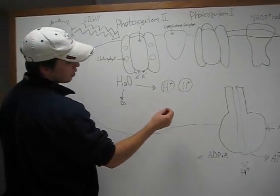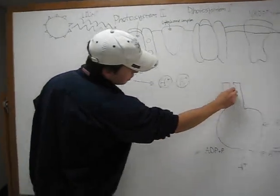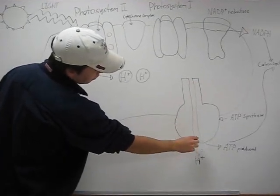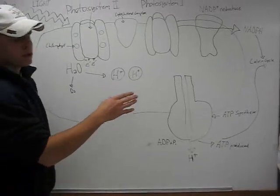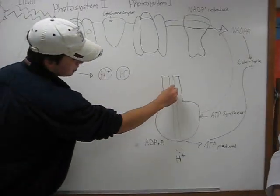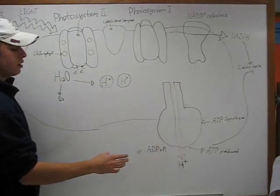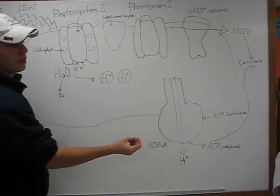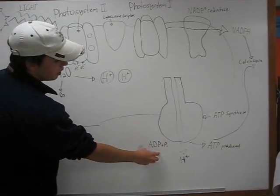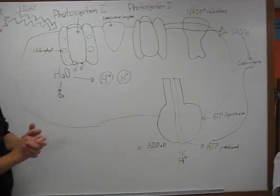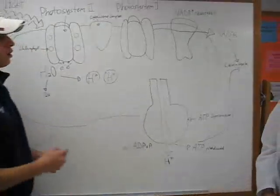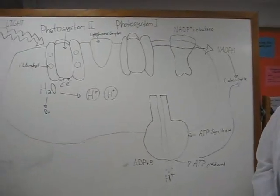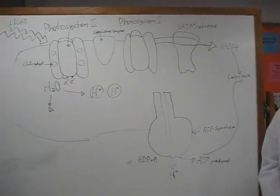The H+ ions are transferred through ATP synthase. Once the H+ passes through ATP synthase, ATP is produced because ADP and phosphate are combined. ATP and NADPH provide the energy for the dark reactions of photosynthesis.